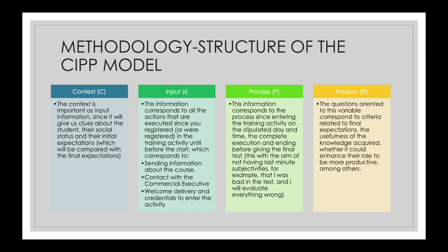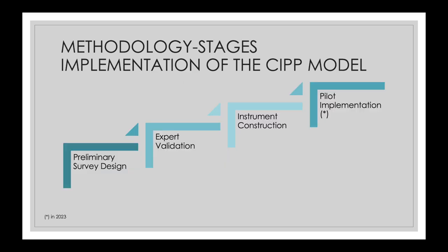The structuring for this research will be given by three stages. Stage 1: Preliminary design for the survey. In this stage, questions associated with each dimension of the SIP model were designed following the process. The construction of the questions will be carried out in accordance with the following criteria.